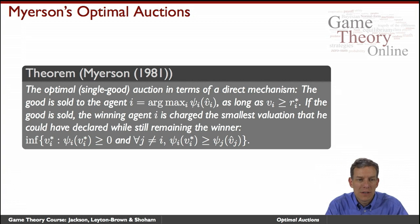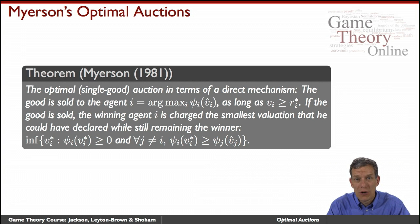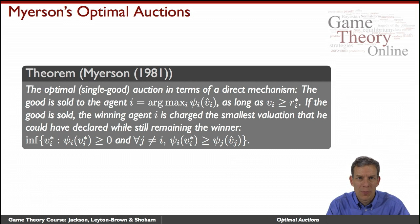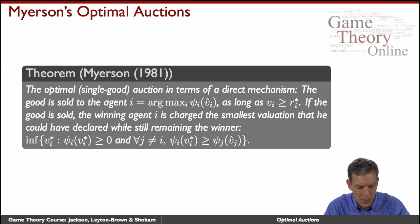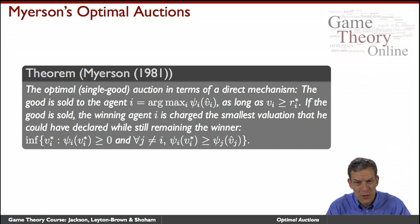Roger Myerson proved a theorem characterizing optimal auctions in 1981 — work that was part of what earned him the Nobel Prize, along with the revelation principle and other contributions. This has been a very influential theorem. Let's look at what it says.